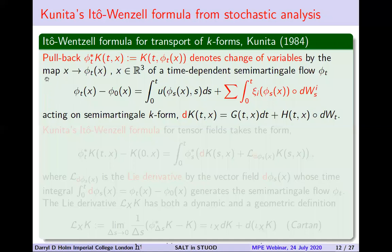Kunita's form of the Ito-Venzel formula for stochastic analysis involves the transport of differential forms — this includes functions, densities, one-forms as occur in the integrand of the Kelvin theorem, and two-forms as occur in the vorticity. All these things are transported by the stochastic flow. We then build it back up into an equation of motion. The key concept is the pullback by our stochastic map, called Phi_T^*, acting on some differential form. In the slot x, you replace it by Phi_T of x, so we're replacing a point in space by the Lagrangian path.